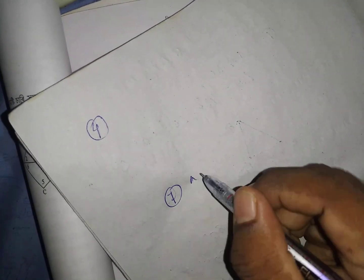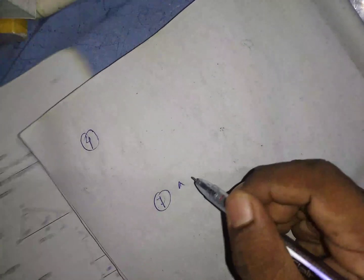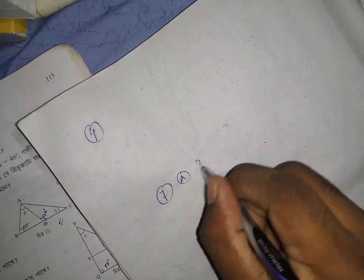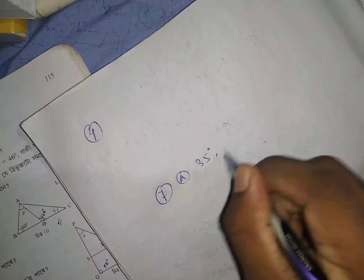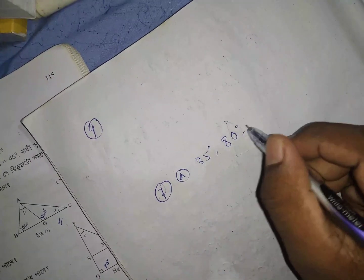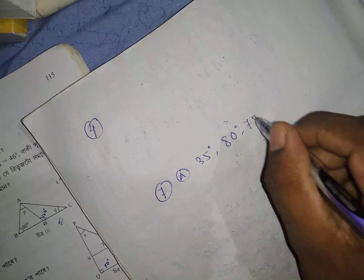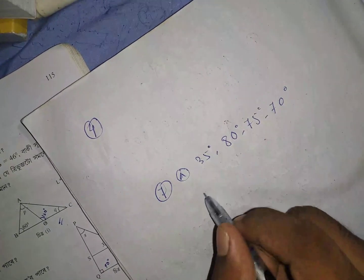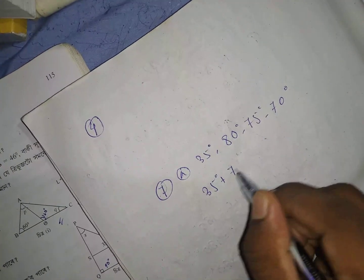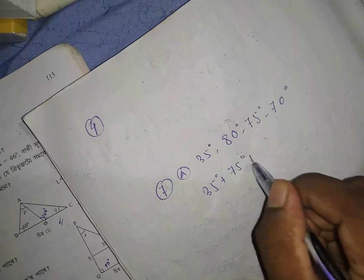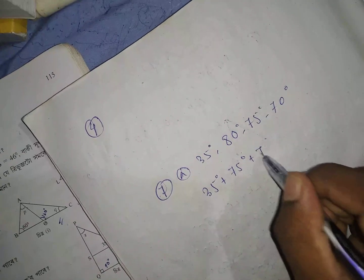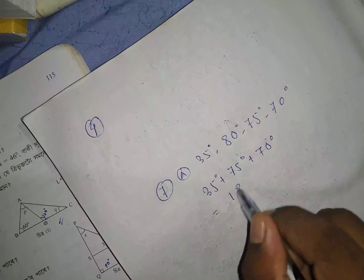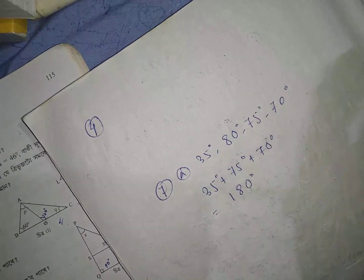Similarly, it is said that of every one, Cut number A2: 35 degrees, 80 degrees, 75 degrees, and 70 degrees. This is 35 degrees, 75 degrees, 70 degrees, and 80 degrees.